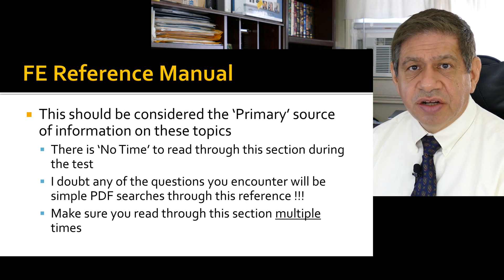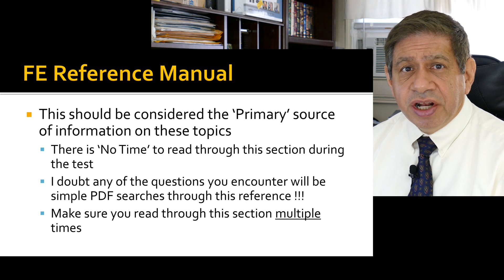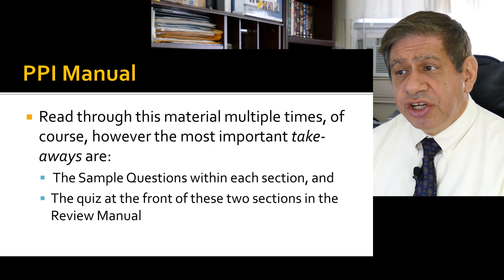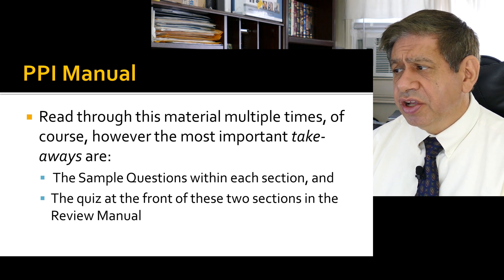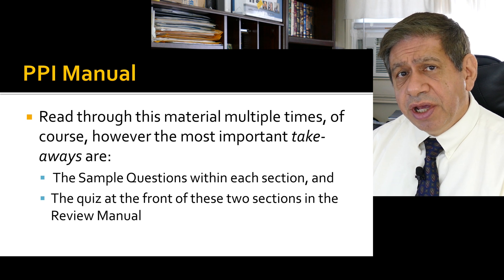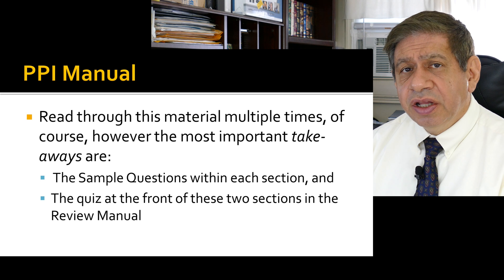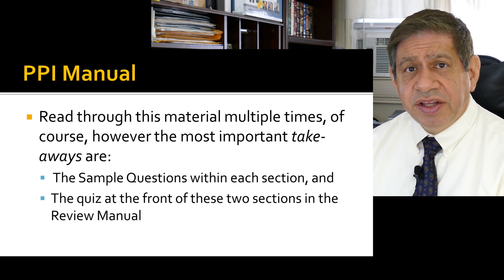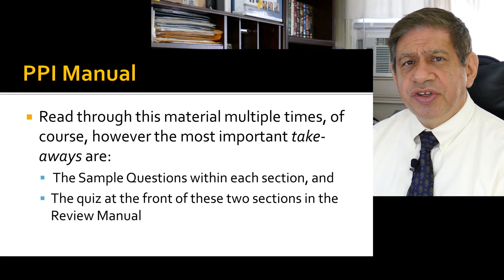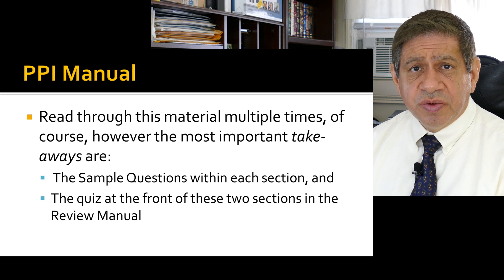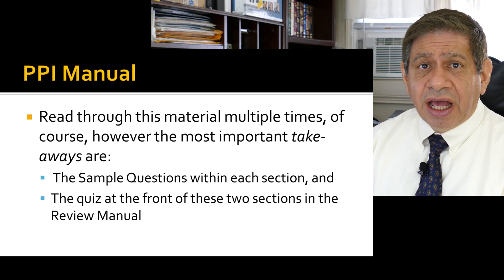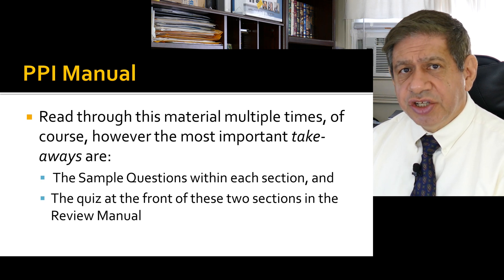Make sure you read through this section multiple times — two, three, four times. Spread it amongst your other study material and cover it more than once. The PPI manual: I suggest you read through the sections — there are three sections that cover this material, at least for electrical and computer, and it slightly changes depending on which discipline manual you get. They also have some very good sample questions and problems on this topic, and a quiz right at the front of the major section covering this general topic.